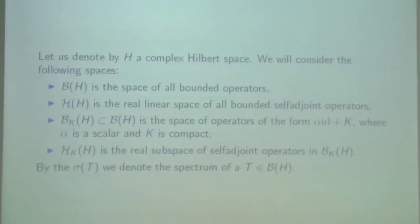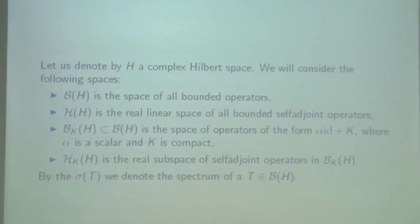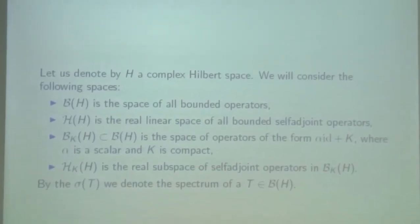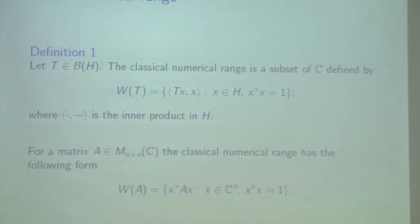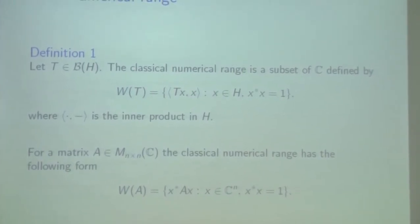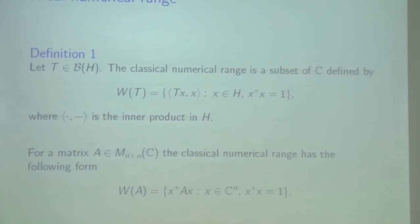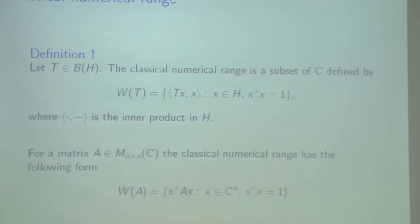By C-POP, we denote the spectrum of bounded operator B. We recall that for bounded operator B, the classical numerical range is a subset defined by the following formula, where the bracket is the inner product of H. And in the case of finite dimensional spaces, we know that the classical numerical range has the following form.